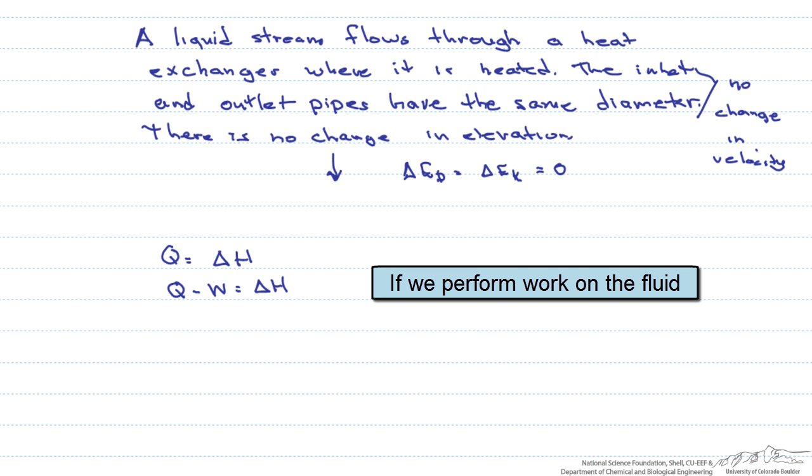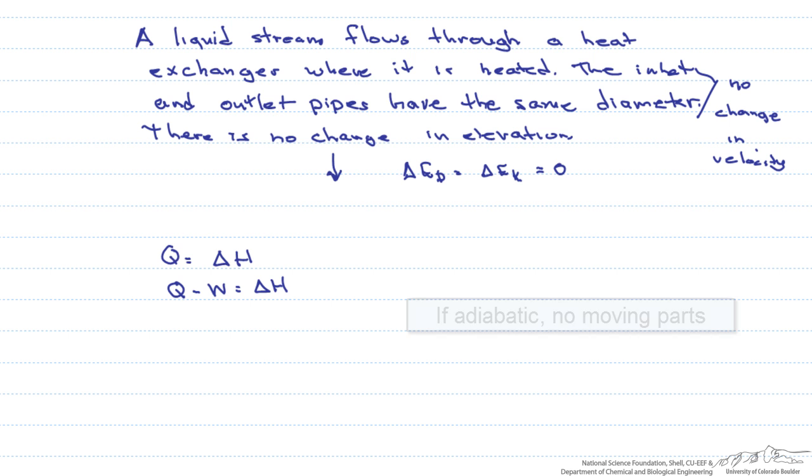Finally, let's say that this system is insulated, there are no moving parts, the potential and kinetic energy are negligible, so what we are left with is that delta H equals zero. And so what that really means is that the initial enthalpy is equal to the final enthalpy.